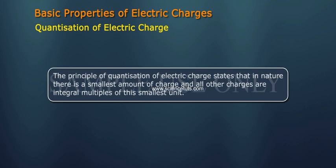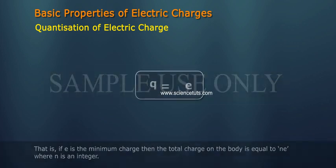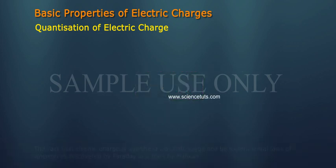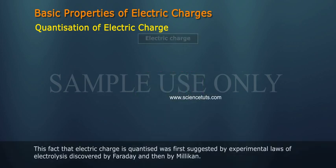That is, if e is the minimum charge, then the total charge on the body is equal to n times e, where n is an integer. This fact that electric charge is quantized was first suggested by experimental laws of electrolysis discovered by Faraday.